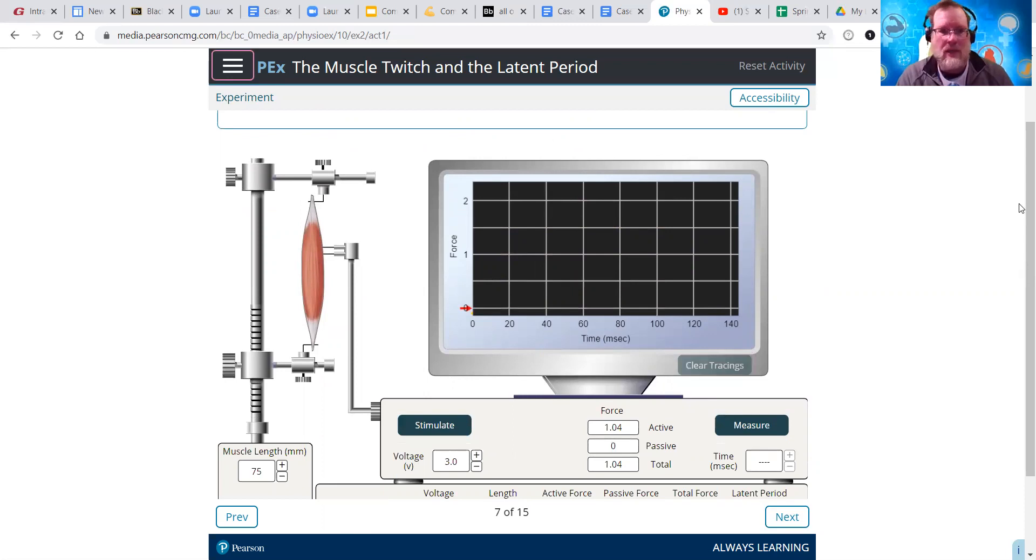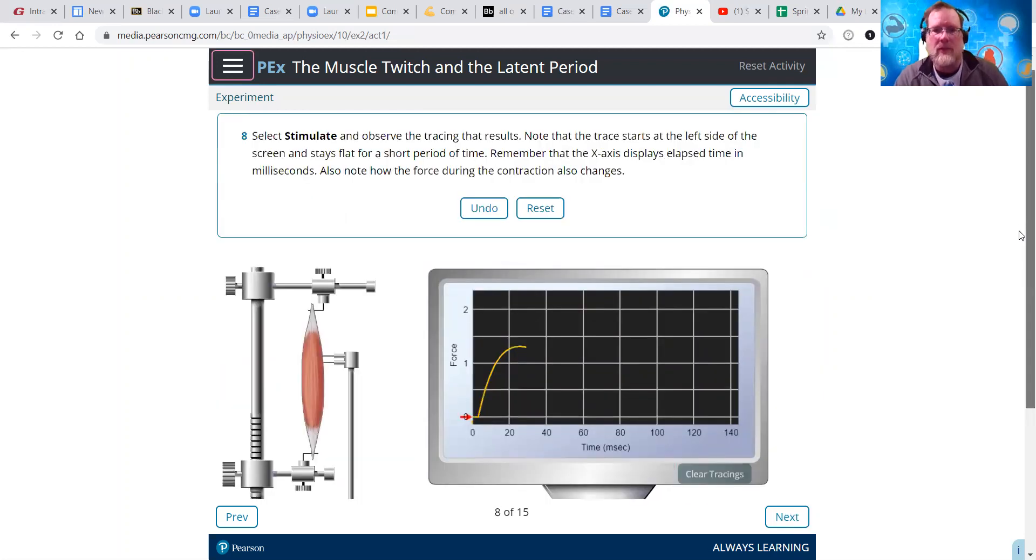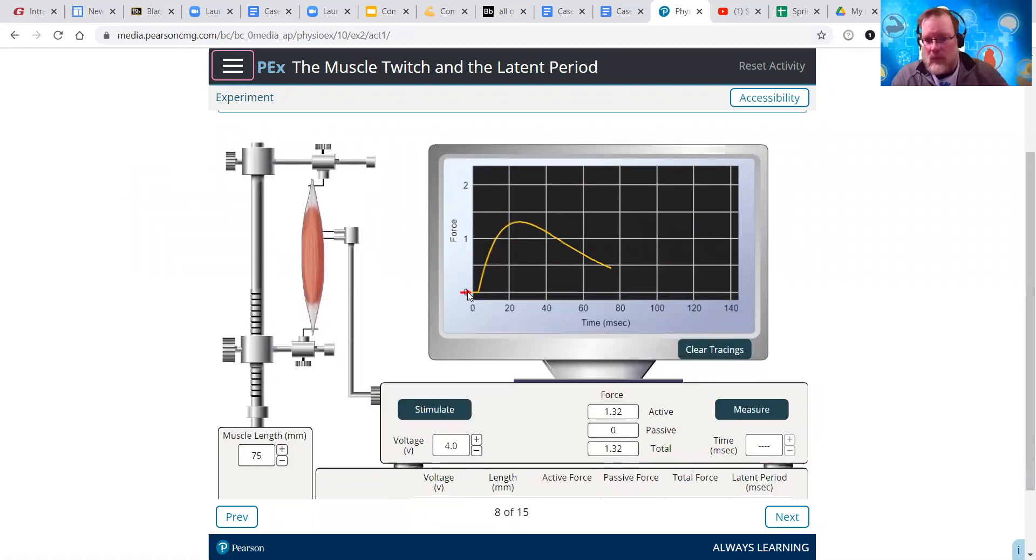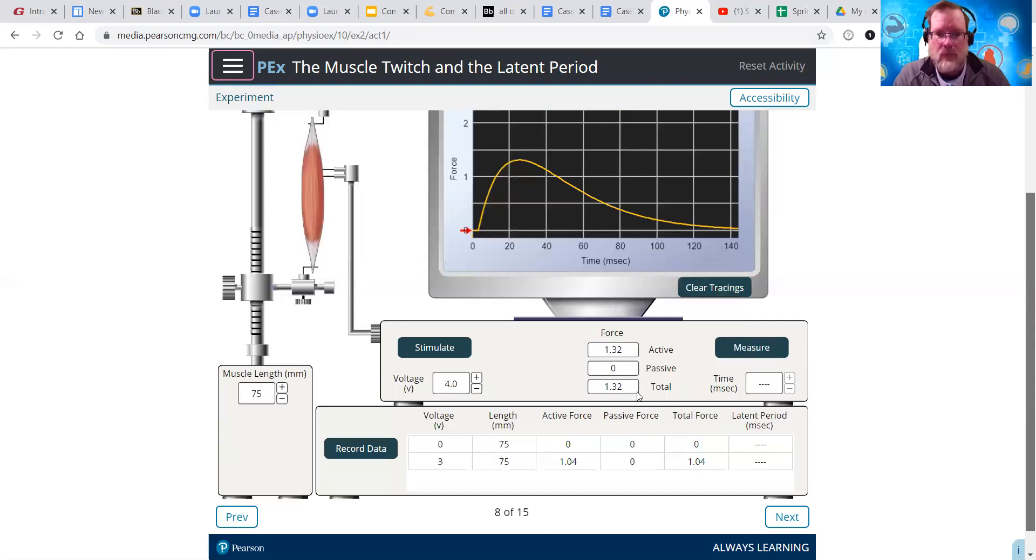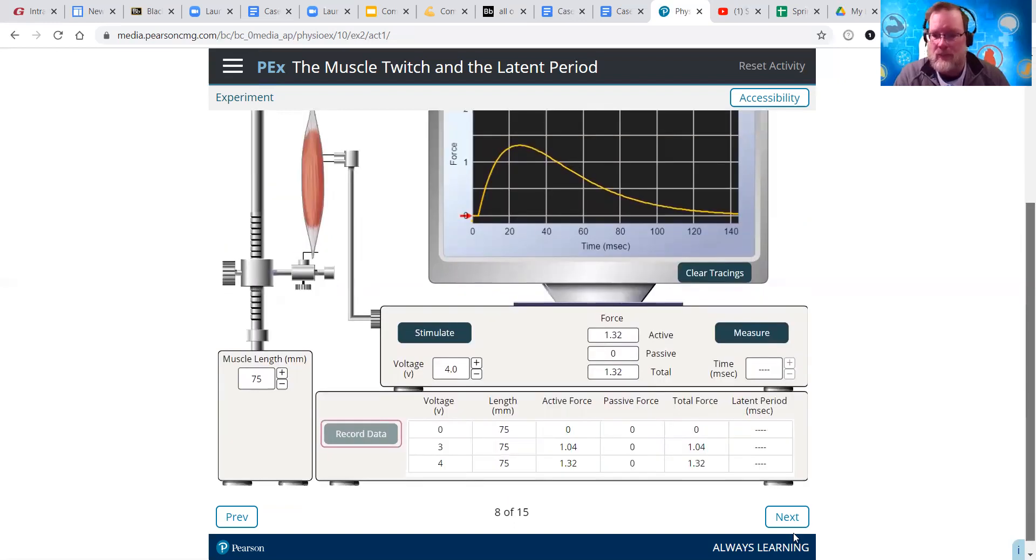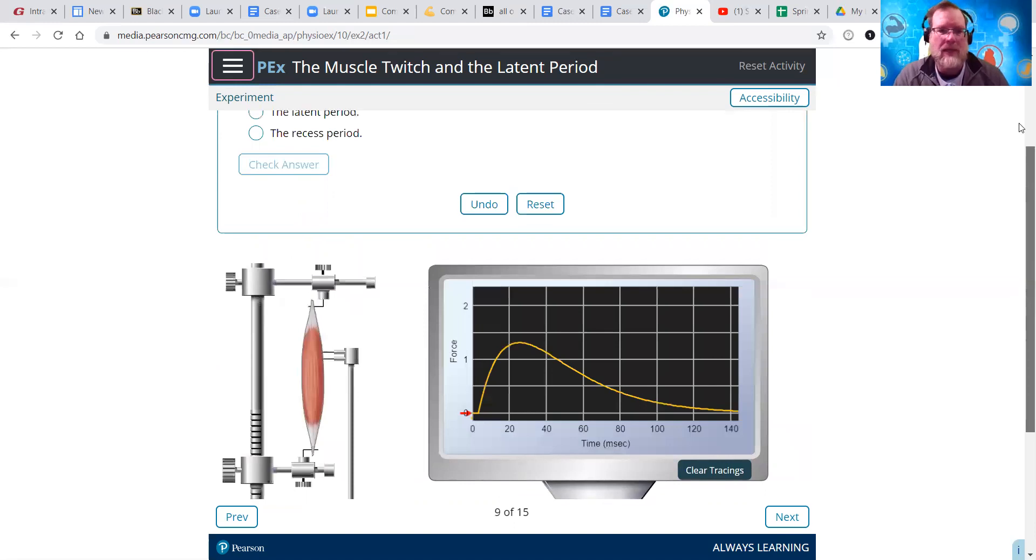Increase the voltage to four. Click next. Select stimulate. We bumped up or increased the voltage. We got a little stronger force of contraction, which is not really what we're measuring. We're going to be looking at the latent period. We click stimulate, and then it's going to ask us a question. What's the period of time that elapses between the generation of the action potential and the start of muscle tension? So, the start of the contraction period, we call the latent period.